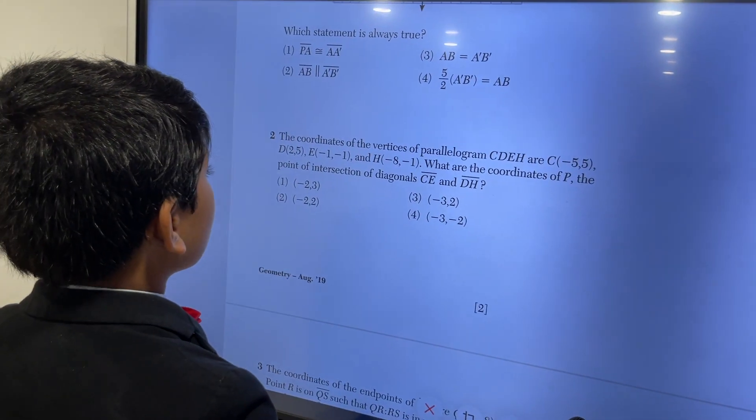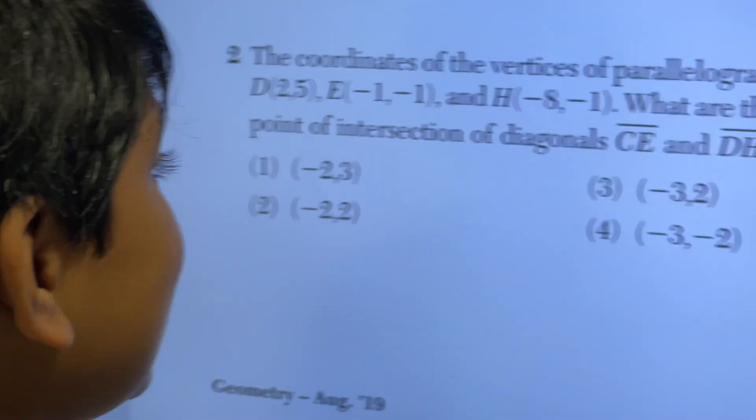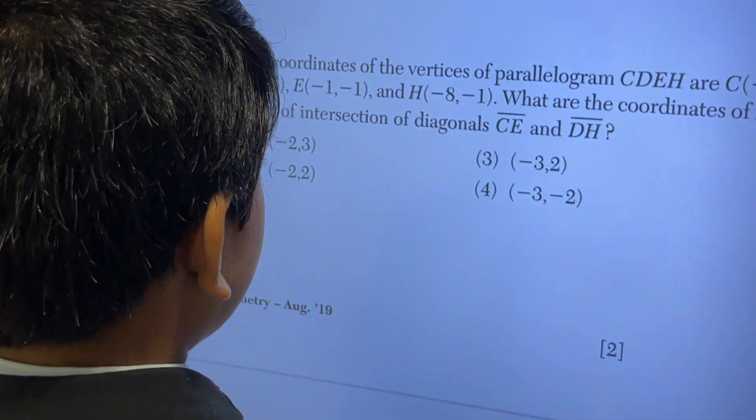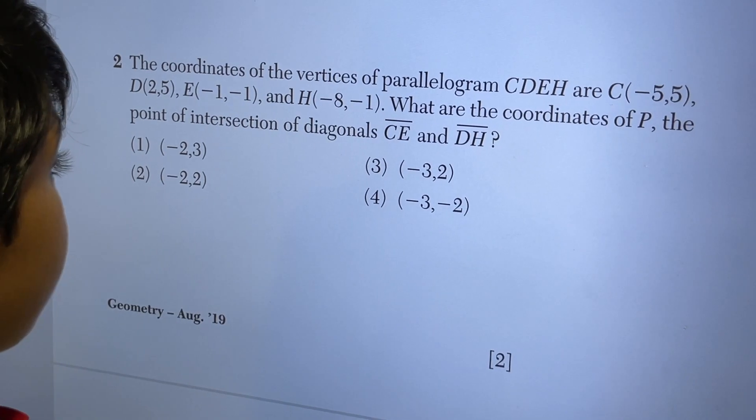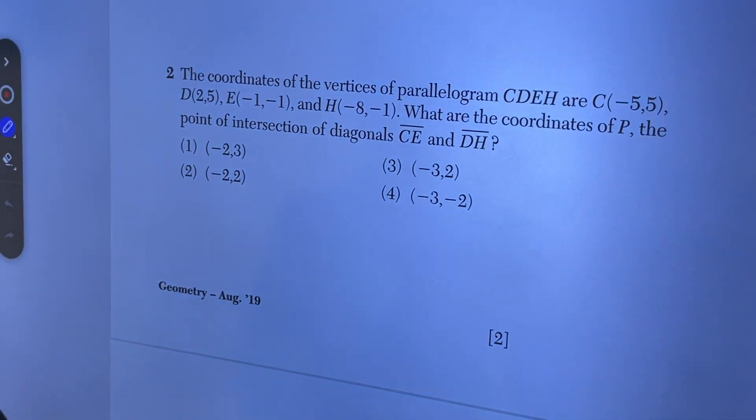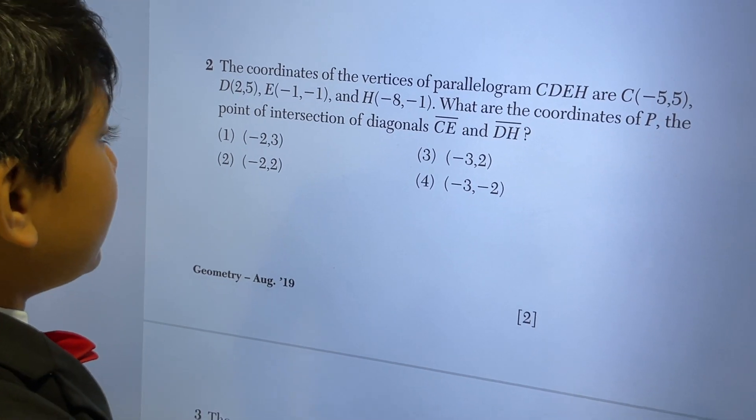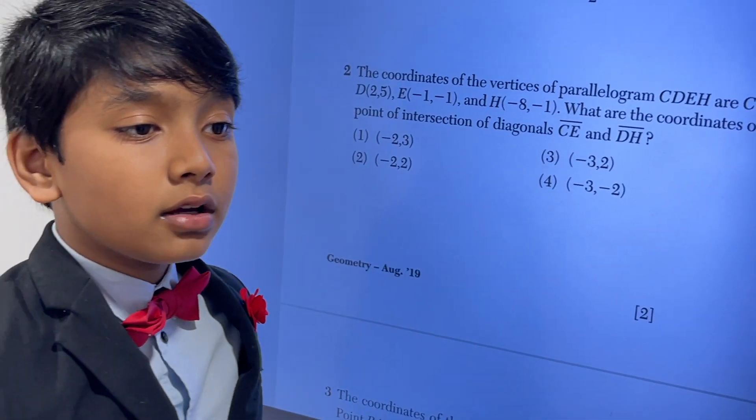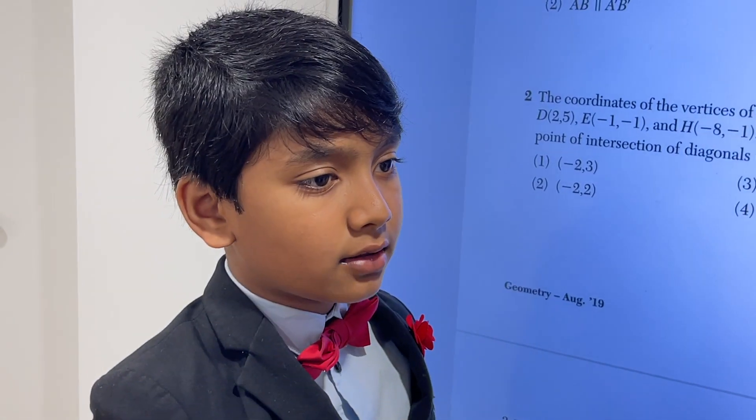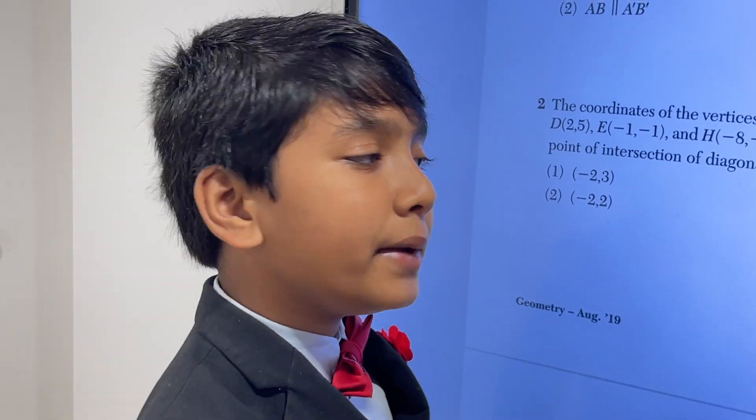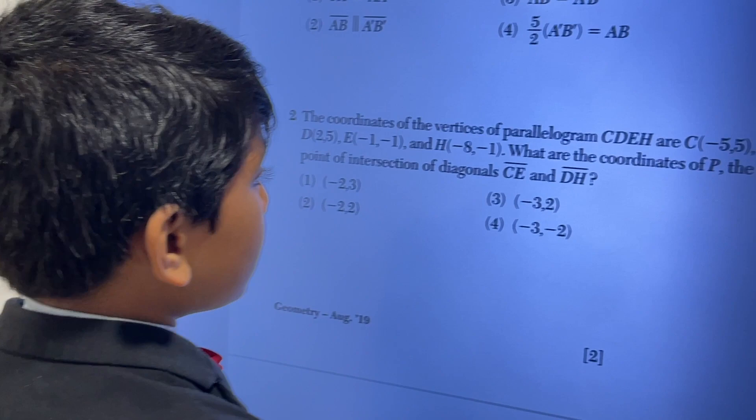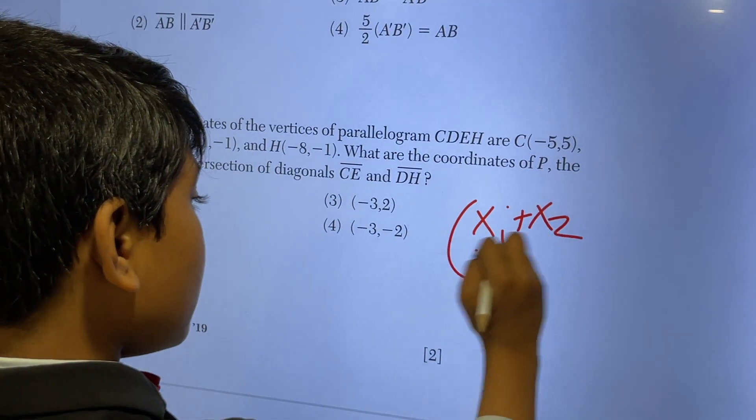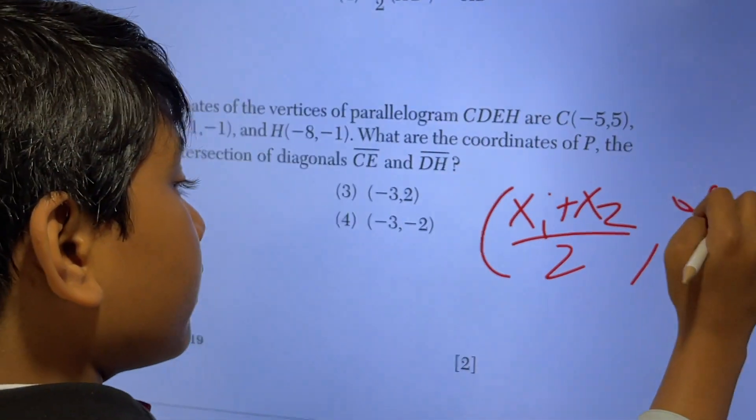Number 2. The coordinates of the vertices of parallelogram CDEH are C negative 5, 5, D 2, 5, E negative 1, negative 1, and H negative 8, negative 1. What are the coordinates of P, the point of intersection of diagonals CE and DH? Well, this is decently simple, because parallelogram diagonals bisect each other, meaning that they intersect at the midpoint. So all we need to do is use the midpoint formula in order to find where these two intersect.